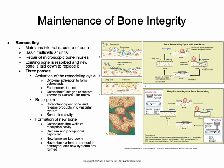New bone formation begins when osteoblasts line the walls of resorption cavities and start to express osteoid and alkaline phosphatase, forming sites of calcium and phosphorus deposition.